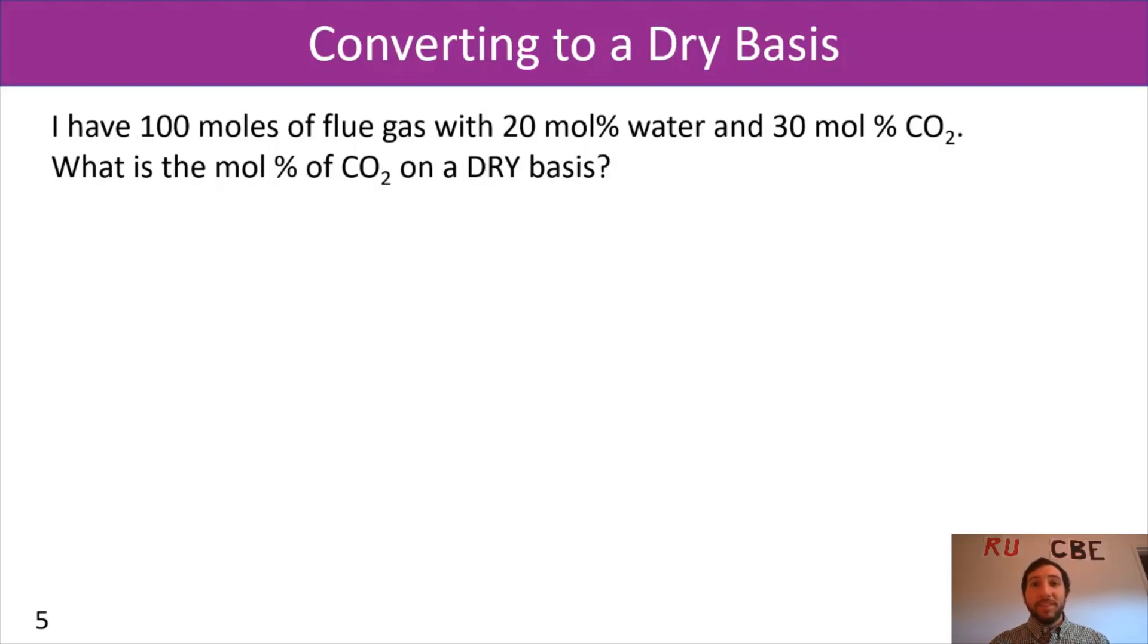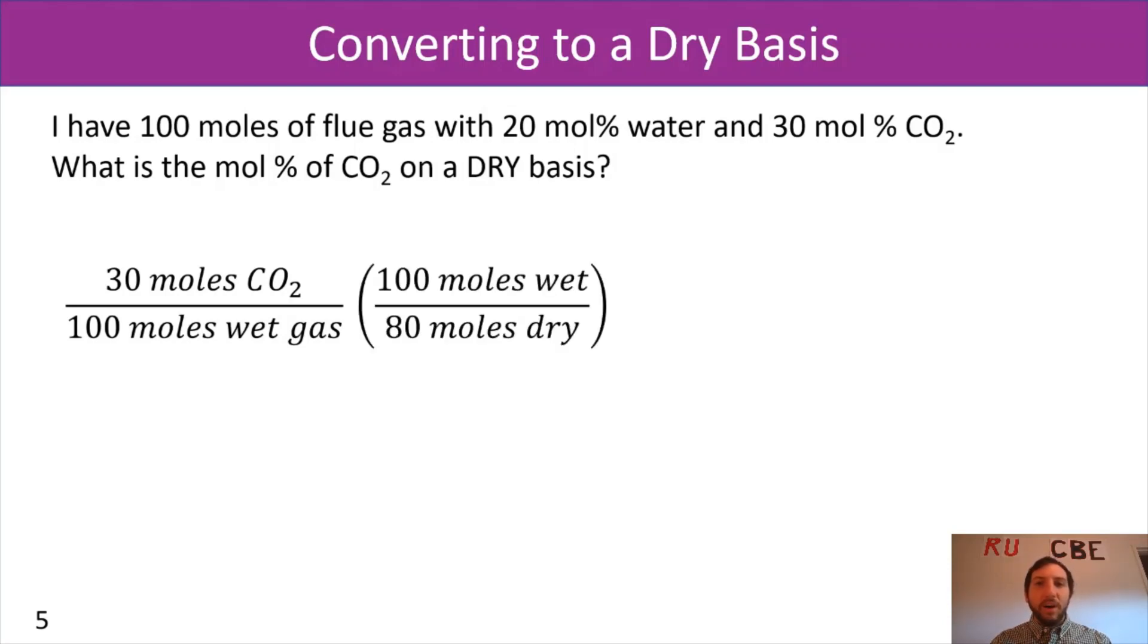And so right now, we're going to do a sample problem to do that conversion going from a wet composition to a dry composition. So for this example, I have 100 moles of flue gas with 20 mole percent water and 30 mole percent carbon dioxide. What is the mole percent of carbon dioxide on a dry basis? So how do we approach this? Well, the first thing we'll want to start off with is just what is our basis on a wet basis. So we have 30 moles of carbon dioxide for 100 moles of wet gas.